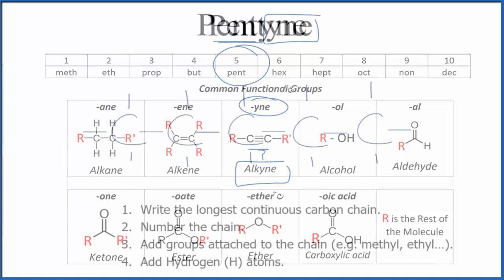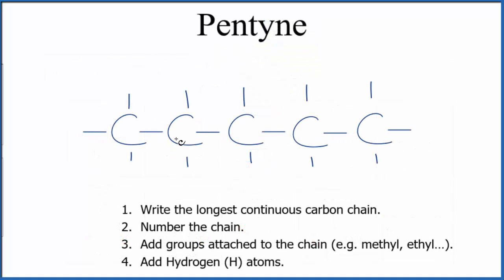Let's put up five carbons. This is our longest chain, and right now this is pentane because everything's single bonded. Let's number the chain. The question is, where do we put the triple bond? There are a few places we could put it. For example, we could put it right here between these two carbons, or we could put it right here.